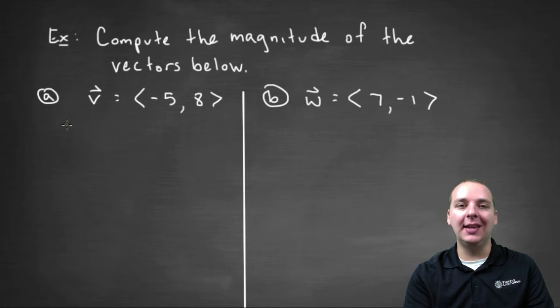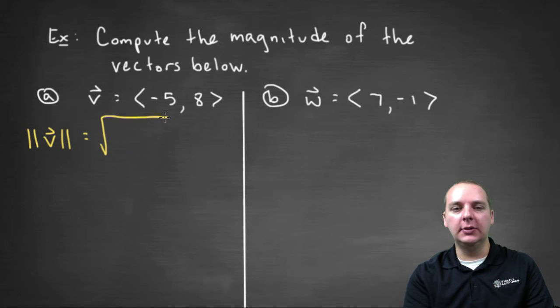And you'll recall that if you want to take its magnitude, you'll put double absolute value bars around it. And since this is in component form, we'll take a big square root of the first component squared, plus the second component squared.